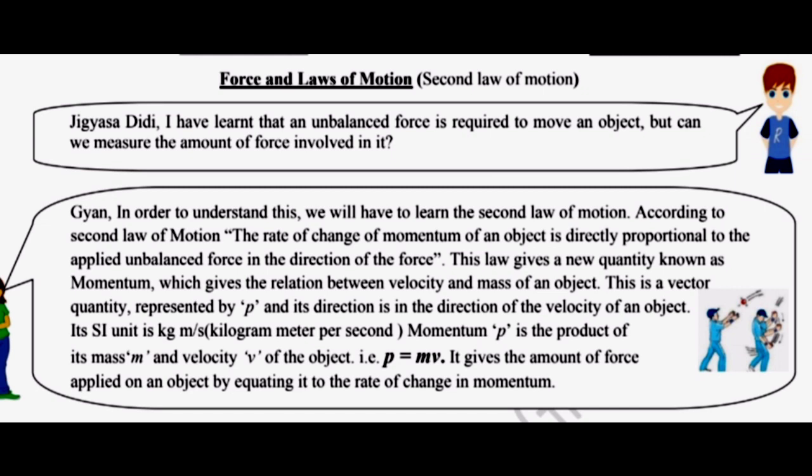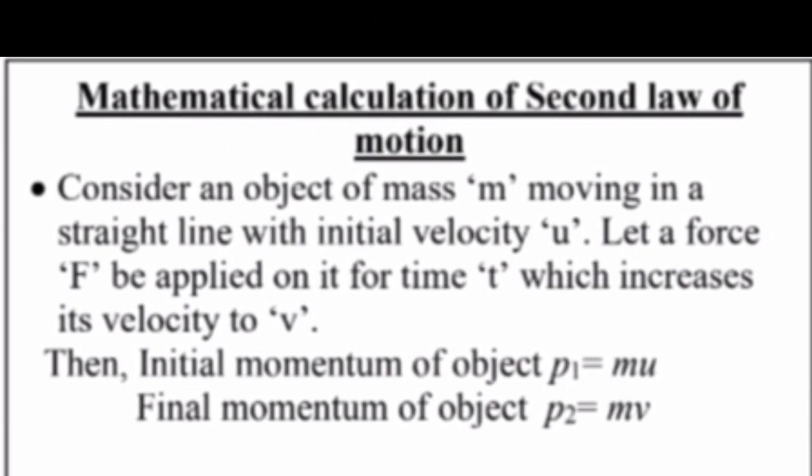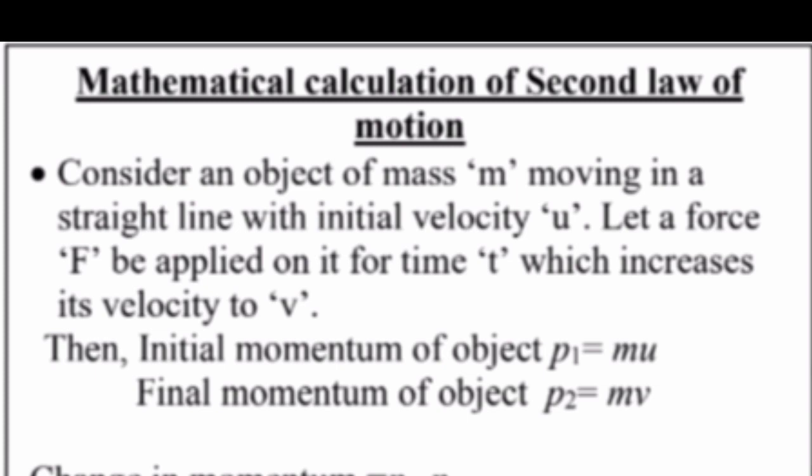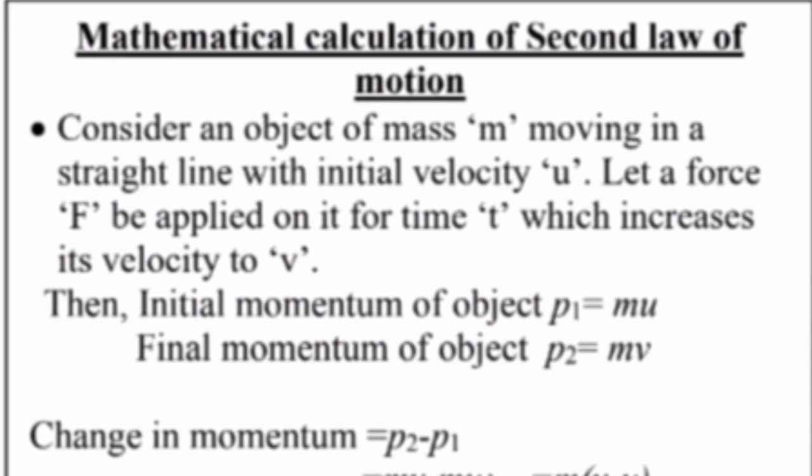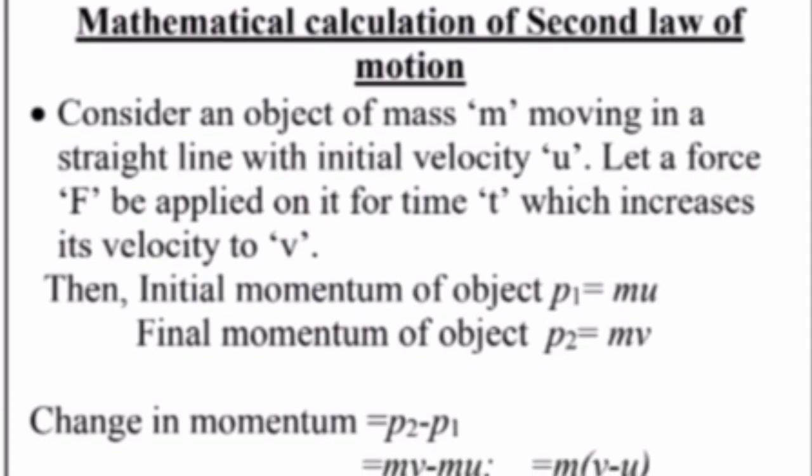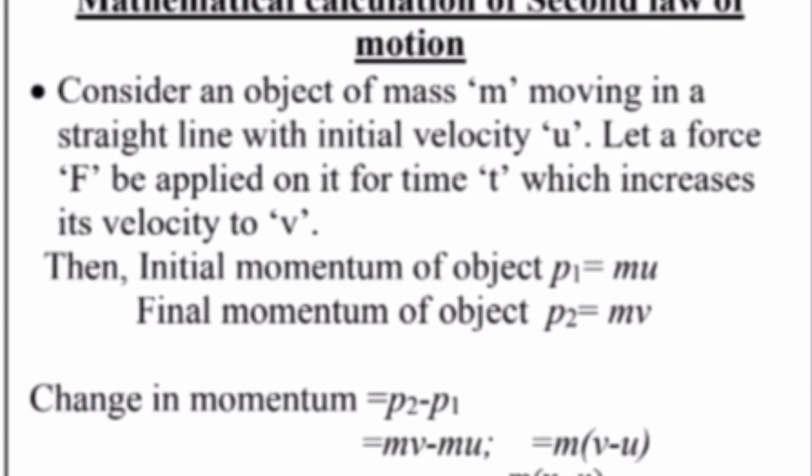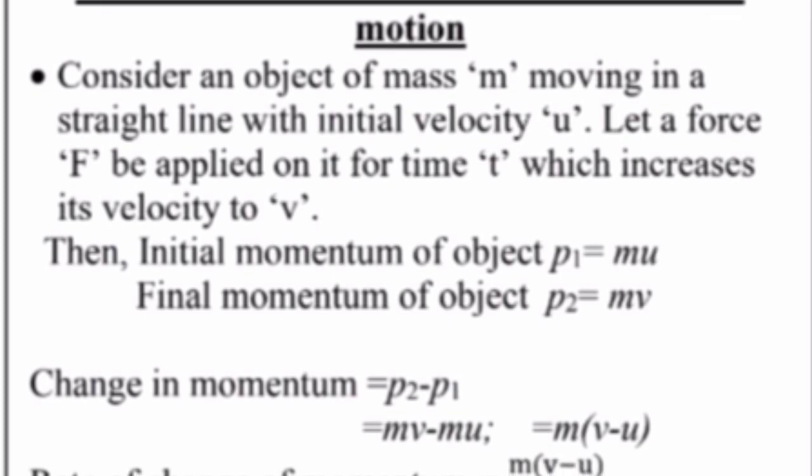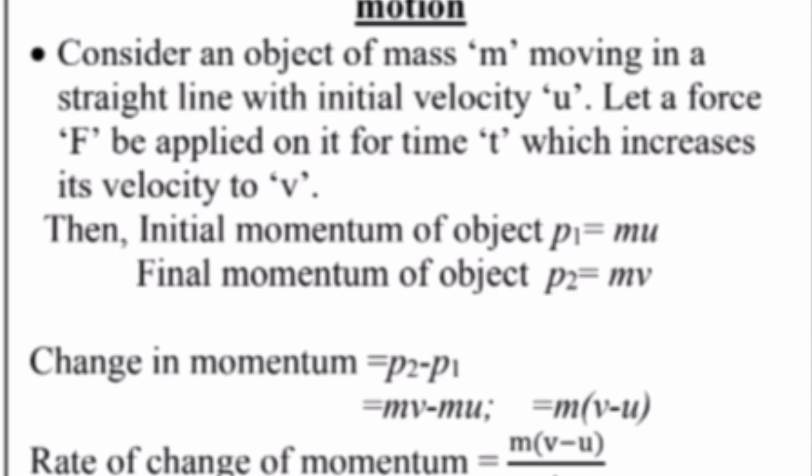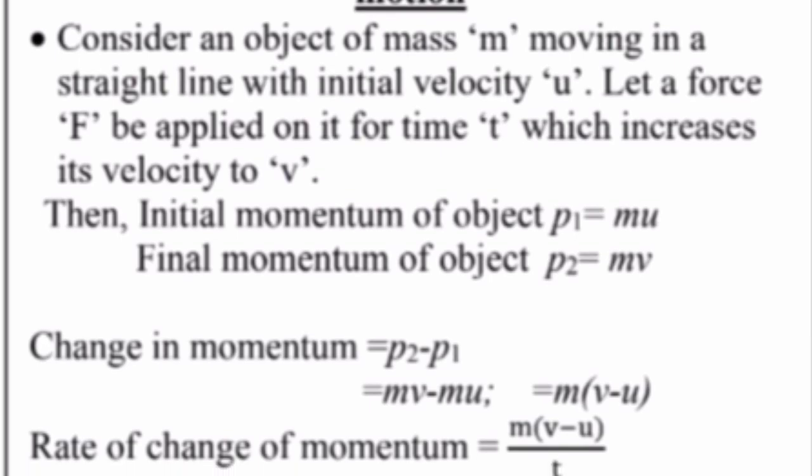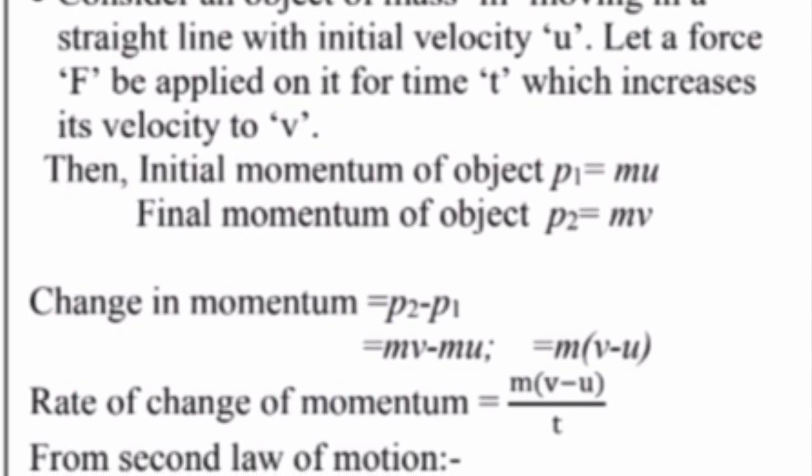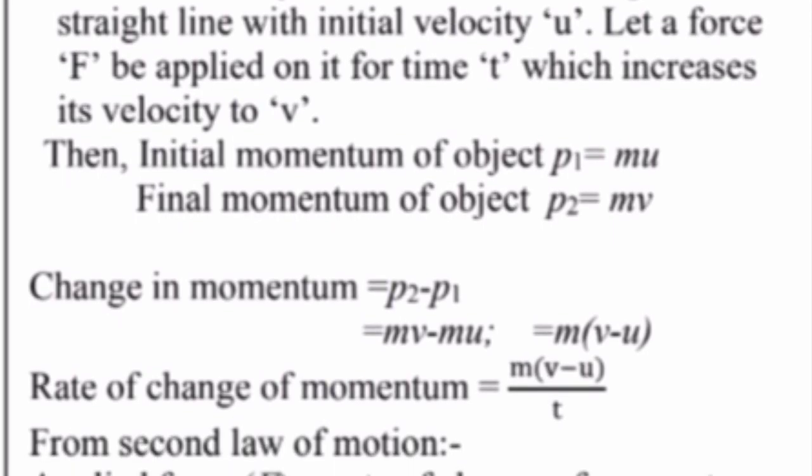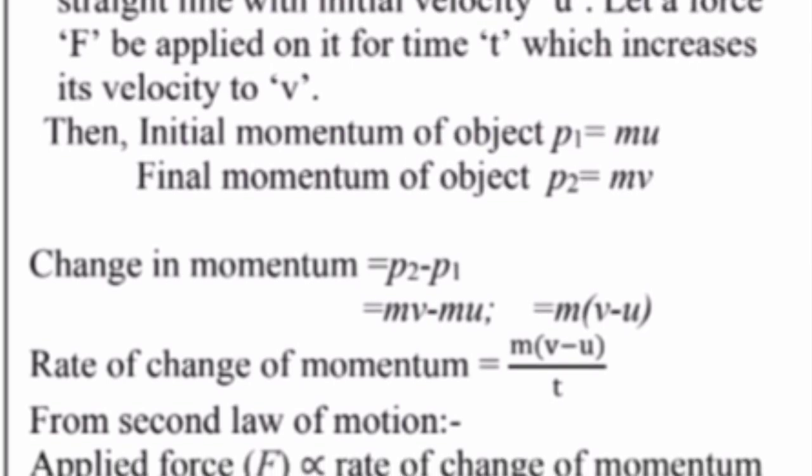Mathematical calculation of second law of motion: Consider an object of mass m moving in a straight line with initial velocity u. Let a force F be applied on it for time t which increases its velocity to v. Then initial momentum of object p1 equals m u. Final momentum of object p2 equals m v. Change in momentum equals p2 minus p1, which is m v minus m u, equals m times v minus u.